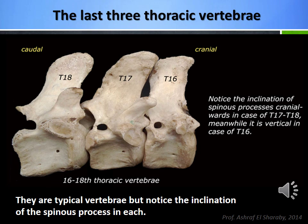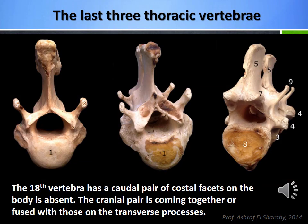Features of the last 3 thoracic vertebrae include: the 16th vertebra is typical but the spinous process is vertical. The 17th vertebra is typical but the spinous process inclines cranially. The 18th vertebra is typical but the spinous process inclines cranially, and the caudal pair of costal facets on the body is absent. The cranial pair comes together or fuses with those on the transverse processes.